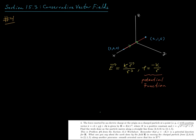The question says the force exerted by an electric charge at the origin on a charged particle at a point (x,y,z) with position vector r = xi + yj + zk is given by this vector field E, which is k times the position vector r divided by this scalar r cubed, where k is a positive constant and r is the scalar radial distance from the origin.